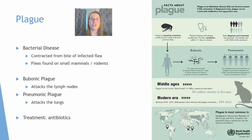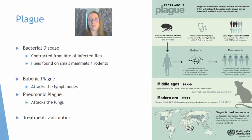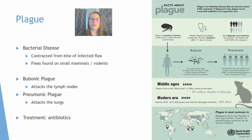The plague is a bacterial disease with two forms: bubonic plague, which primarily attacks the lymph nodes, and pneumonic plague, which attacks the lungs and leads to pneumonia. In either case, the plague travels via the bite of a flea, and those fleas contract the plague from small mammals or rodents. Both forms are treated with antibiotics. Today there are still occasional outbreaks of the plague worldwide, but with modern medicine we are able to treat it quickly.